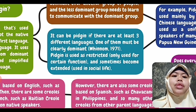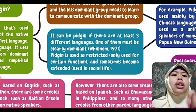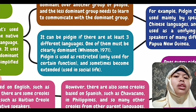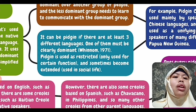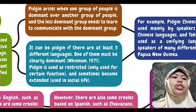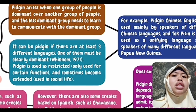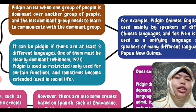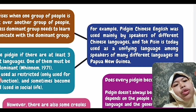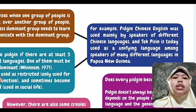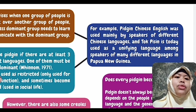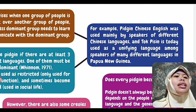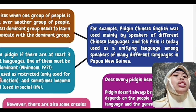Pidgin is used in a restricted way — it means it is only used for certain functions — but sometimes it becomes extended and is used in social life. There are so many Pidgins in this world, such as Tok Pisin in Papua New Guinea, which has been used in their social life. Examples include Pidgin Chinese English, used mainly by speakers of different Chinese languages, and Tok Pisin, used as a unifying language among speakers of many different languages in Papua New Guinea.